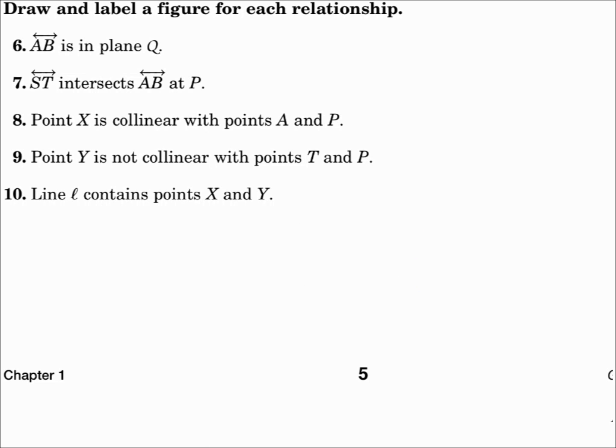Number 8. Point X is collinear with points A and P. We have three points, and they're collinear, which means they're all on the same line. So, we'll draw the line first. One line, it contains three collinear points, X, A, and P.